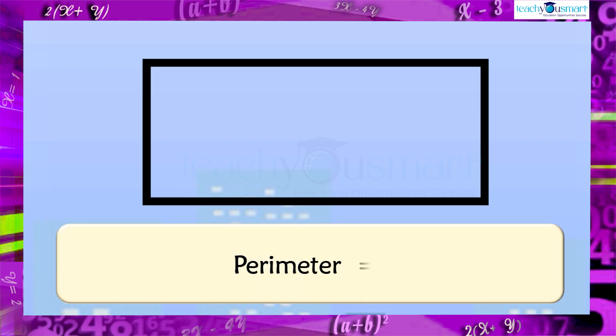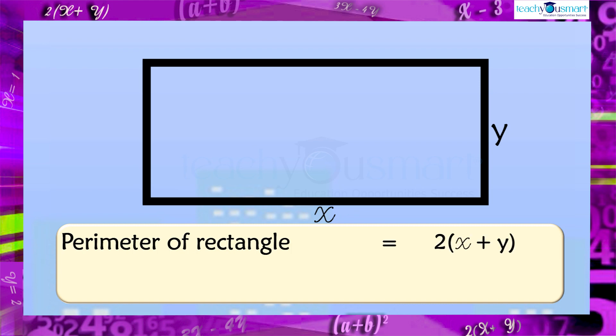Can you find the perimeter of the rectangle? Of course, we can. But the length and breadth are unknown. Here also, define the unspecified length and breadth as x and y. Then the perimeter of this rectangle is two times x plus y, that is, two multiplied by x plus y.